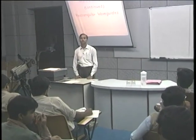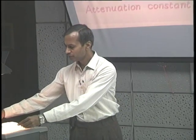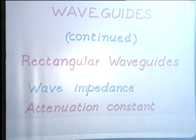Welcome to the 31st lecture in the course Engineering Electromagnetics. We continue our discussion on rectangular waveguides. Today we first discuss the answer to a question that was raised in the last lecture, and then we go on to discuss the wave impedance and attenuation constant for rectangular waveguides.